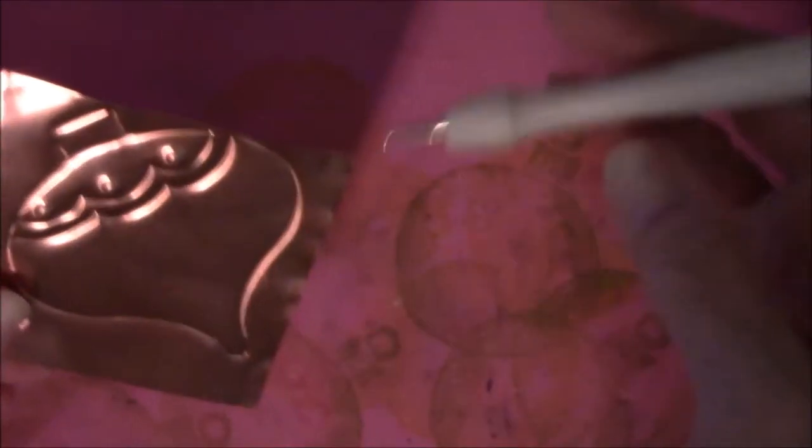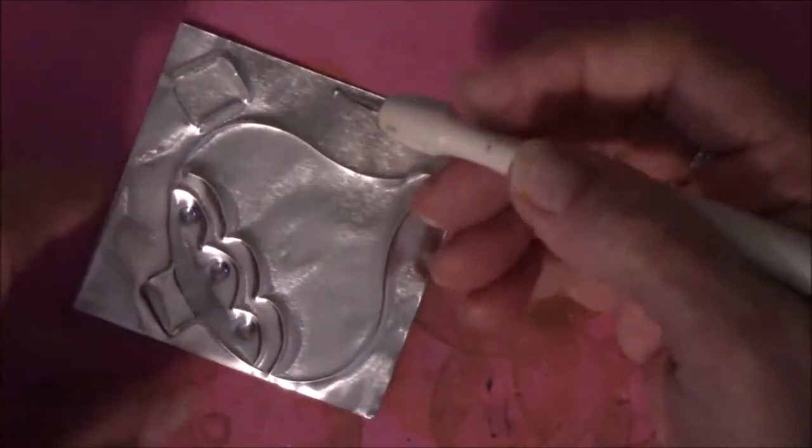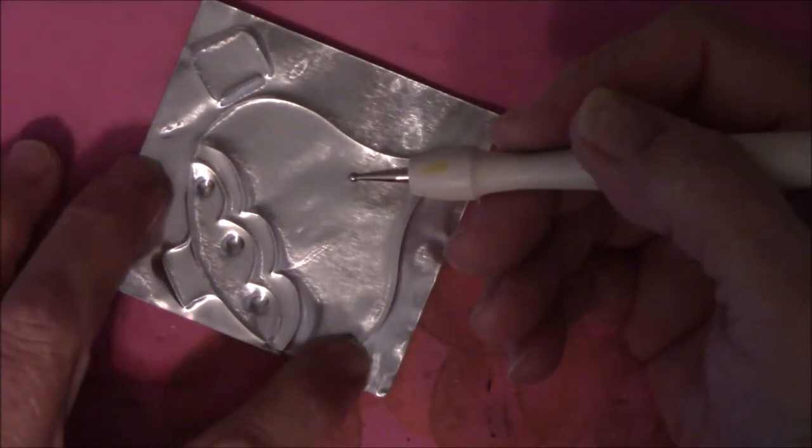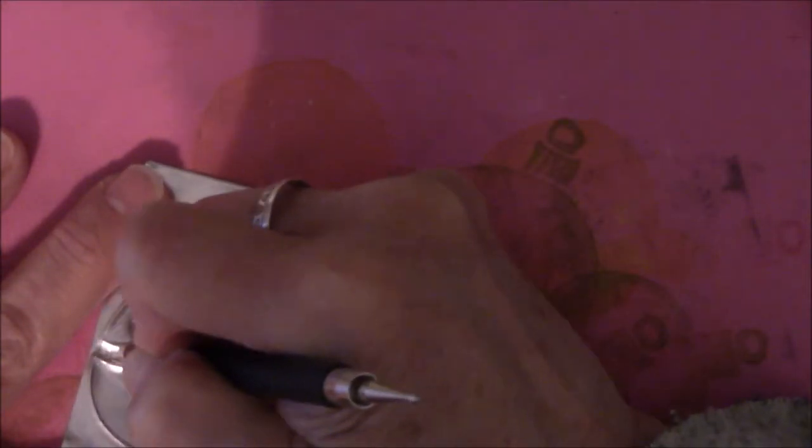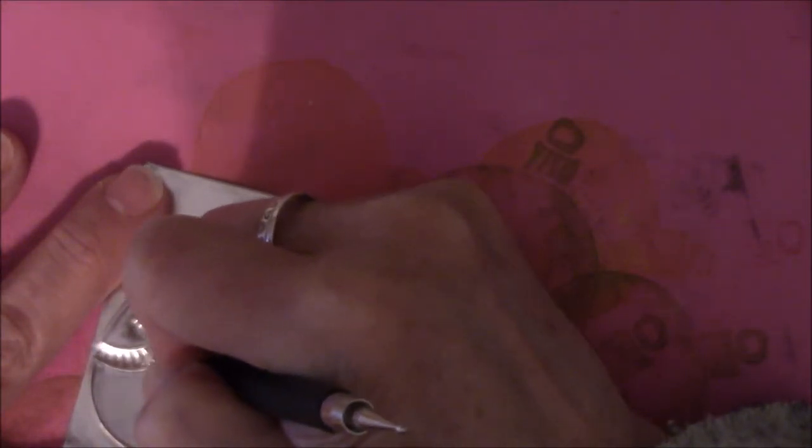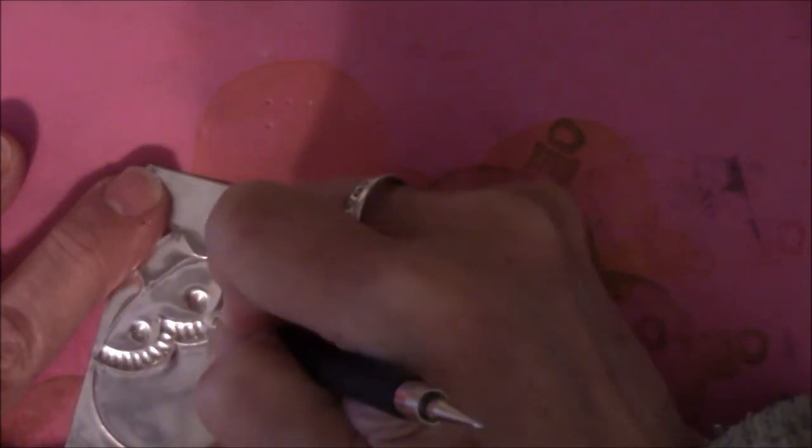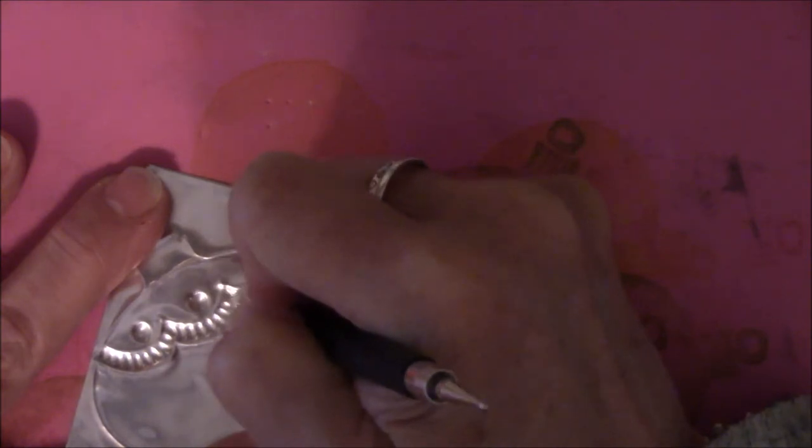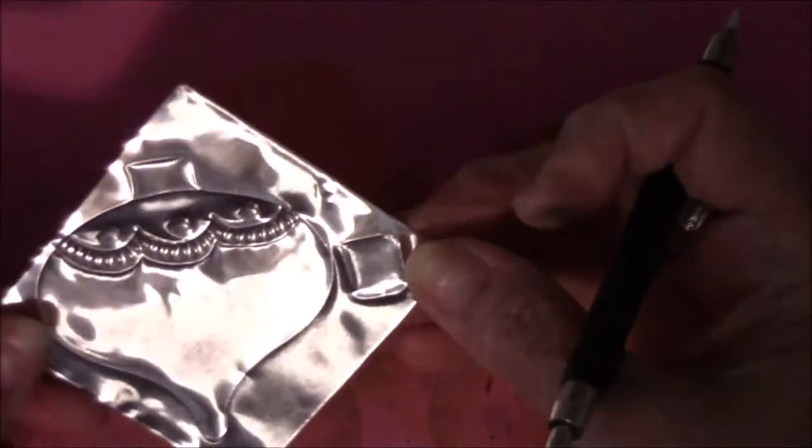So then I'm going to take the other side of the stylus because it's a smaller ball than this one. Do I want to do that? No, I do not. I'm going to make lines. I like lines. So I'm going to do lines in here. I'll just go along and do the lines in here. There's that.